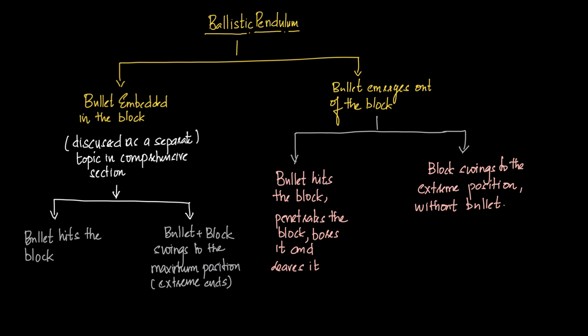When the bullet is embedded in the block, we divide the topic into two sub-halves. One: when the bullet hits the block. Two: when the bullet and the block swing to the maximum position. In the second case — which is actually this question — the bullet hits the block, penetrates it, makes a hole, and exits. Then only the block swings to the extreme position.